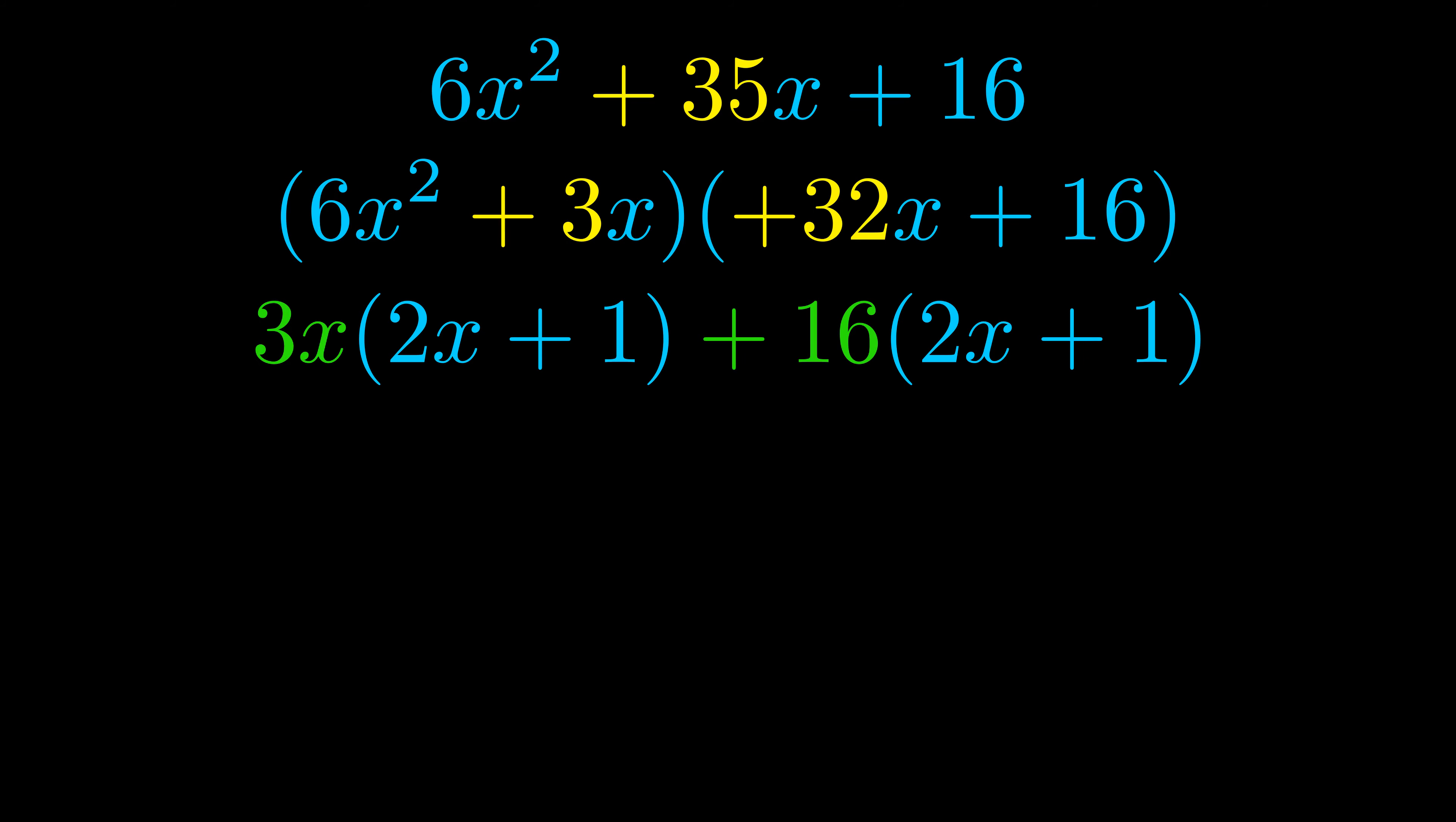Notice how what remains inside the parentheses is the same in both cases. The blue values are the same. Those blue values will become one of our factors, and we will combine the two green values, the GCFs that we pulled out, to get the other one. And that is our fully factored equation.